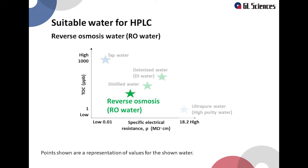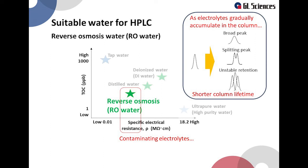Next is reverse osmosis water, abbreviated as RO water. Here is a rough image of the TOC and specific electrical resistance values for RO water. As you can see, the value of TOC is lower than the two types of pure water introduced before. However, the value of specific electrical resistance is low, meaning contaminating high electrolytes. Unlike TOC, the electrolytes effect may not appear immediately on the chromatogram, as electrolytes gradually accumulate in the column. Broad peaks, split peaks, and unstable retention could be problems after accumulating electrolytes in the column. Therefore column life may be shorter compared to using ultra-pure water.